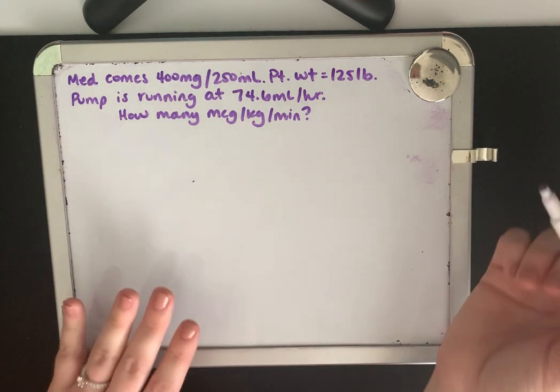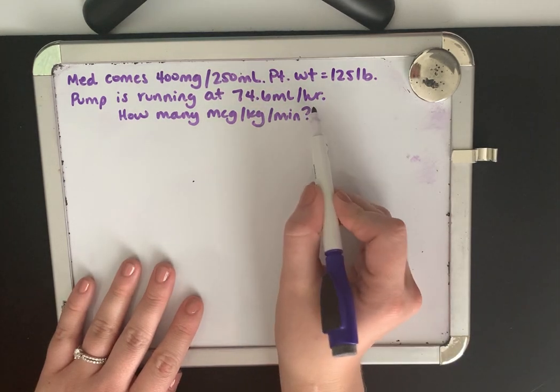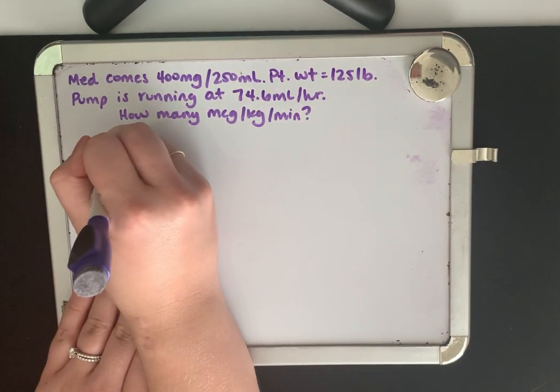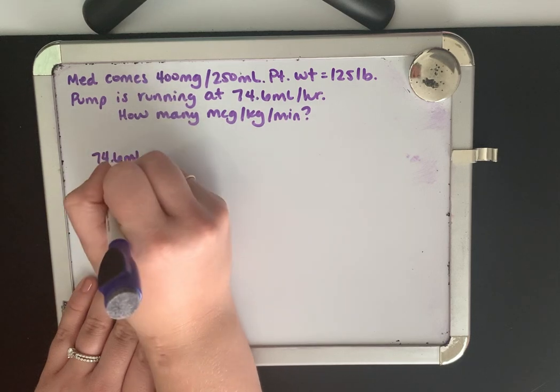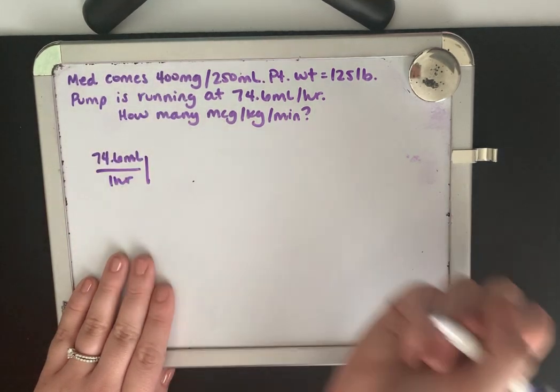So as we always begin, let's start with what we know. We know our pump is running at 74.6 mL for every hour, one hour.